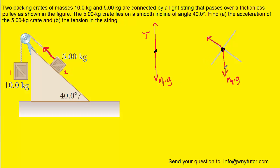The problem with the gravitational force is that it lies in both the x and y directions. We want to break it into its components so that one component points along the x-axis and the other along the y-axis. From the diagram, the angle between the ramp and the horizontal is 40 degrees, and this angle here is also 40 degrees. The x component points down the ramp and is opposite to the 40-degree angle, so we use the sine function: M2 times G times sine of 40. The y component is adjacent to the 40-degree angle, so we use cosine: M2 times G times cosine of 40.